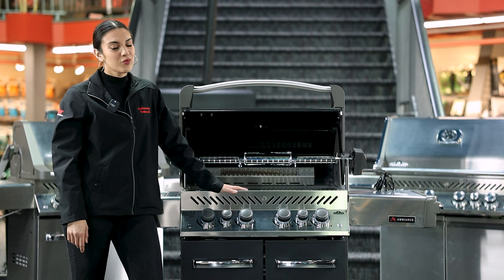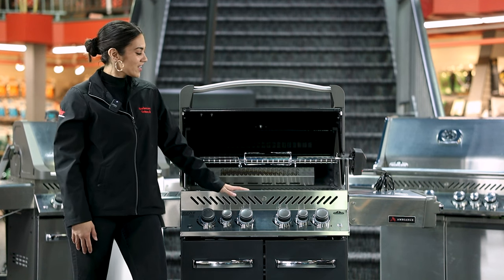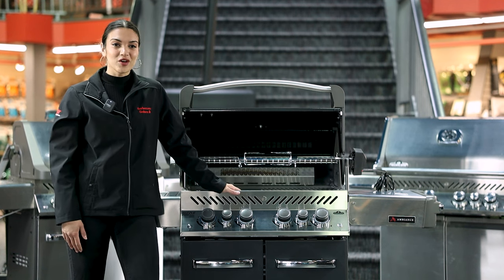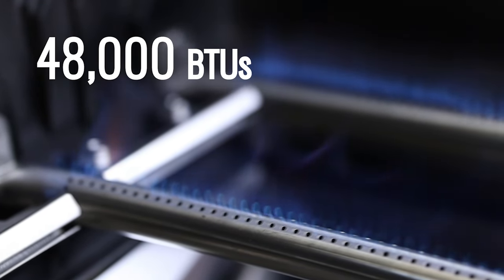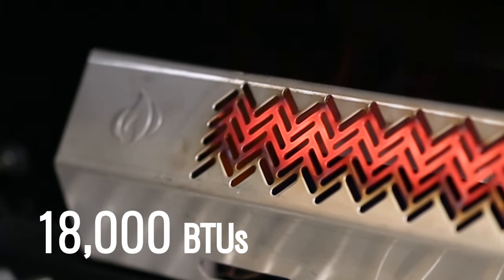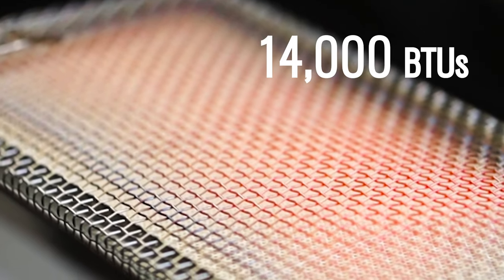Below the sear plates are the most important part of the barbecue, the burners. The Prestige P500 Ambiance Edition has a total of 80,000 BTUs, with 48,000 coming from the main cookbox, 18,000 coming from the rear burner, and 14,000 coming from the sear burner.